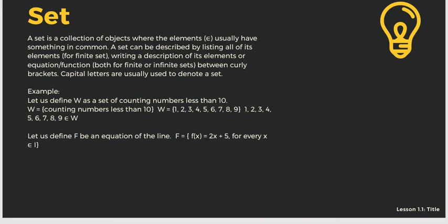Let's have a given example. Let us define W as a set of counting numbers less than 10. So W = {1, 2, ..., 9} — less than 10, so we will not consider number 10 as part of the set. We go from number 1 to number 9. Let us also define F as the function f(x) = 2x + 5 for every x in the set. So what is included in your sample?